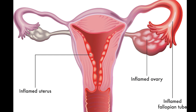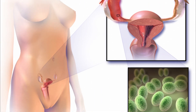What are the causes of PID? Due to ascending infection, after miscarriage, abortion, and childbirth. Also following the insertion of an IUD. The bacteria include Chlamydia trachomatis and Neisseria gonorrhoeae.